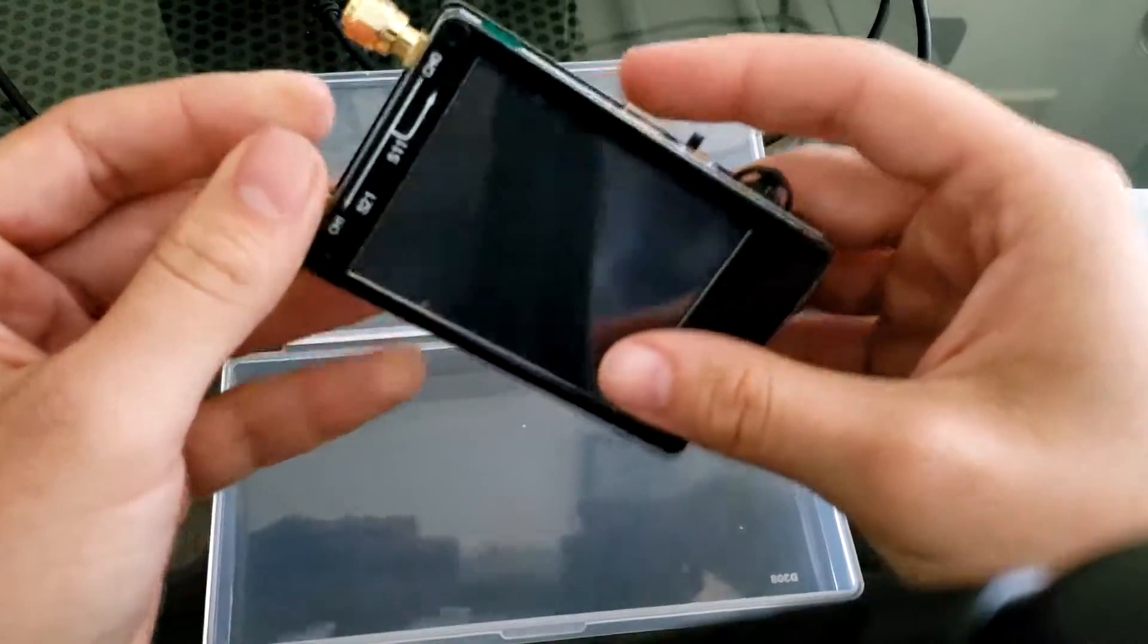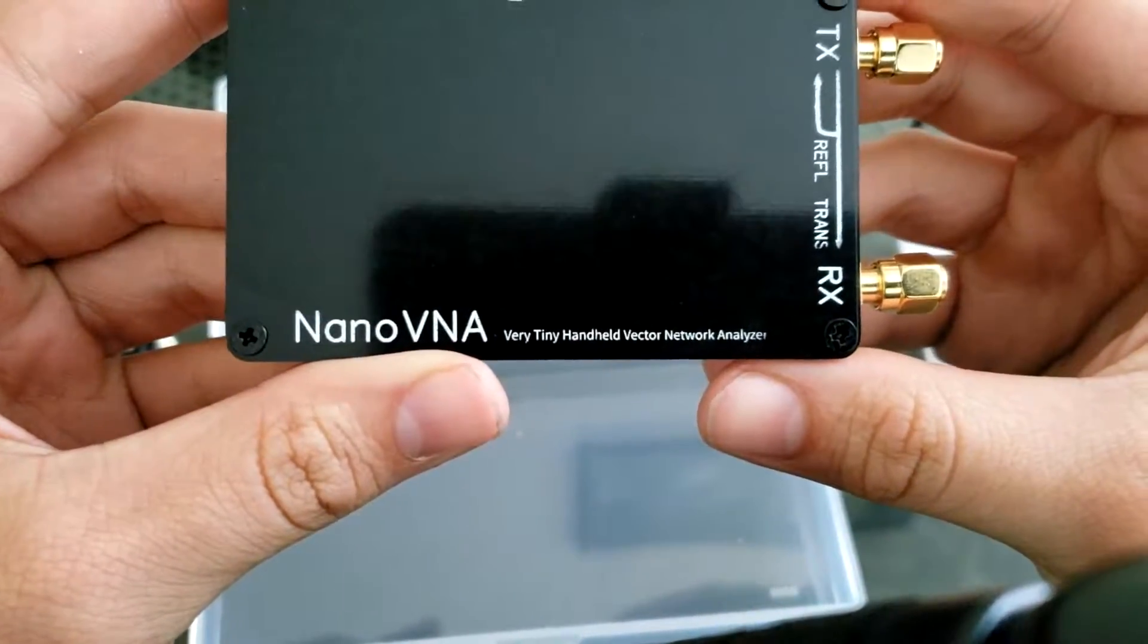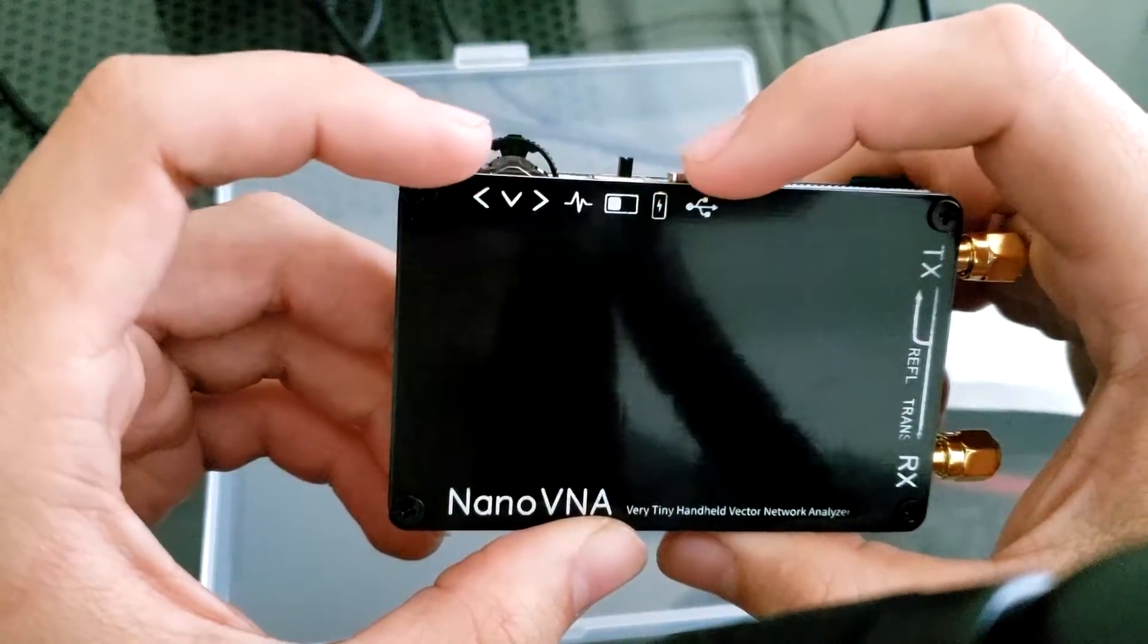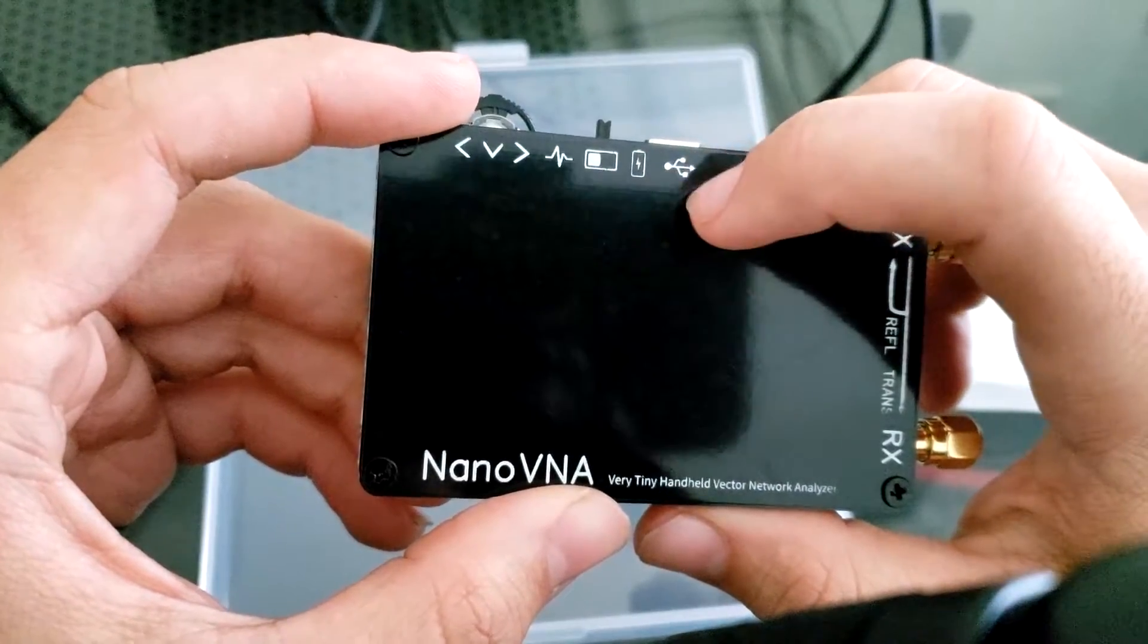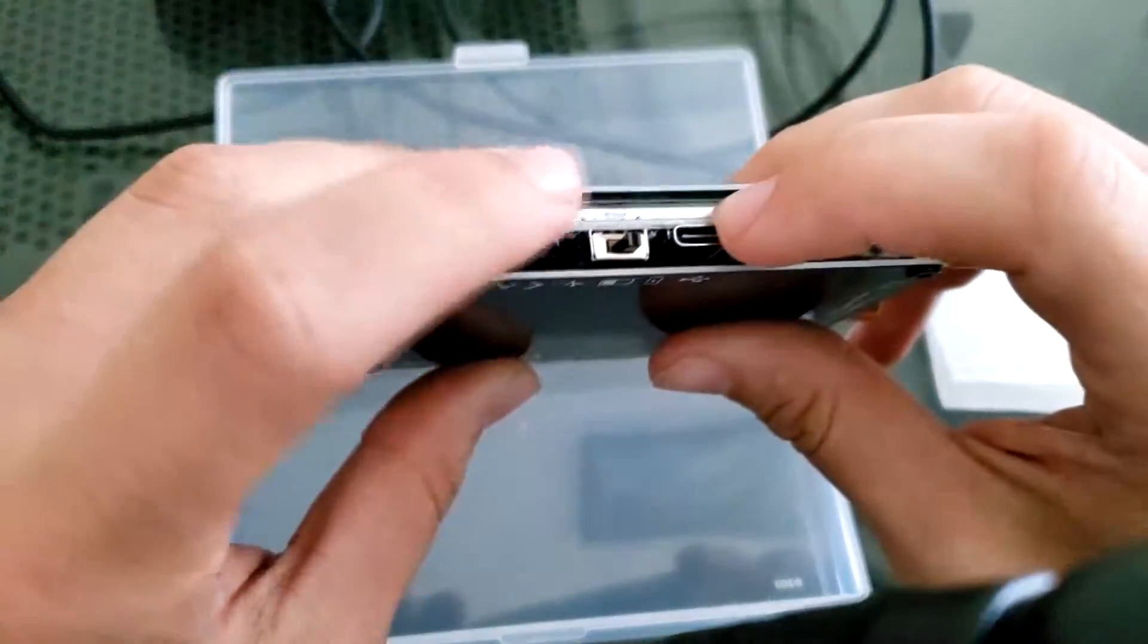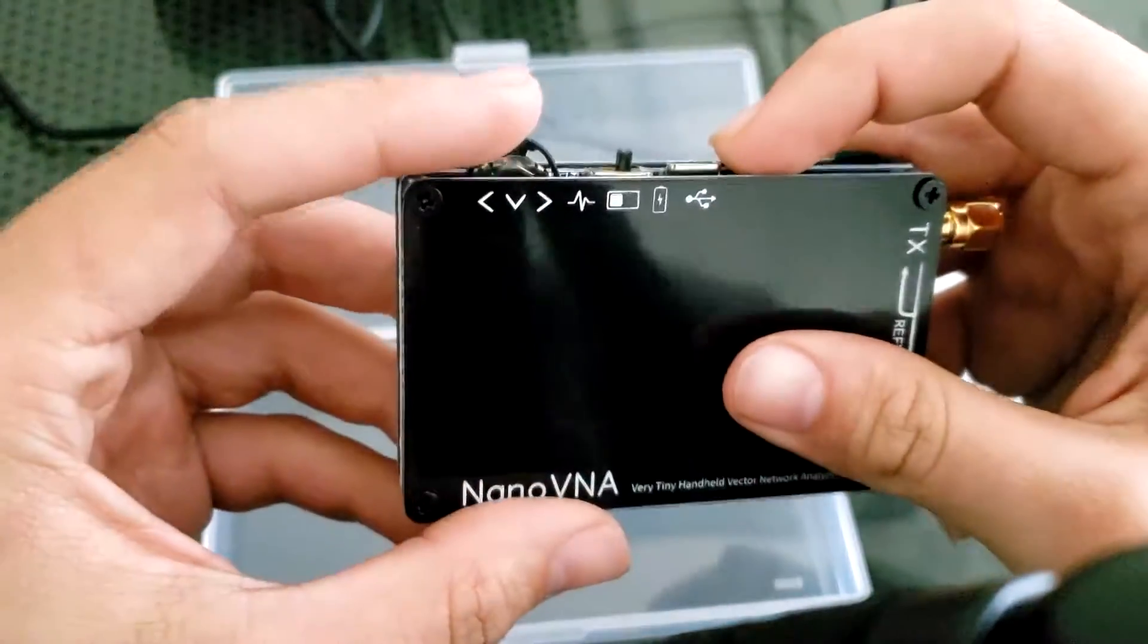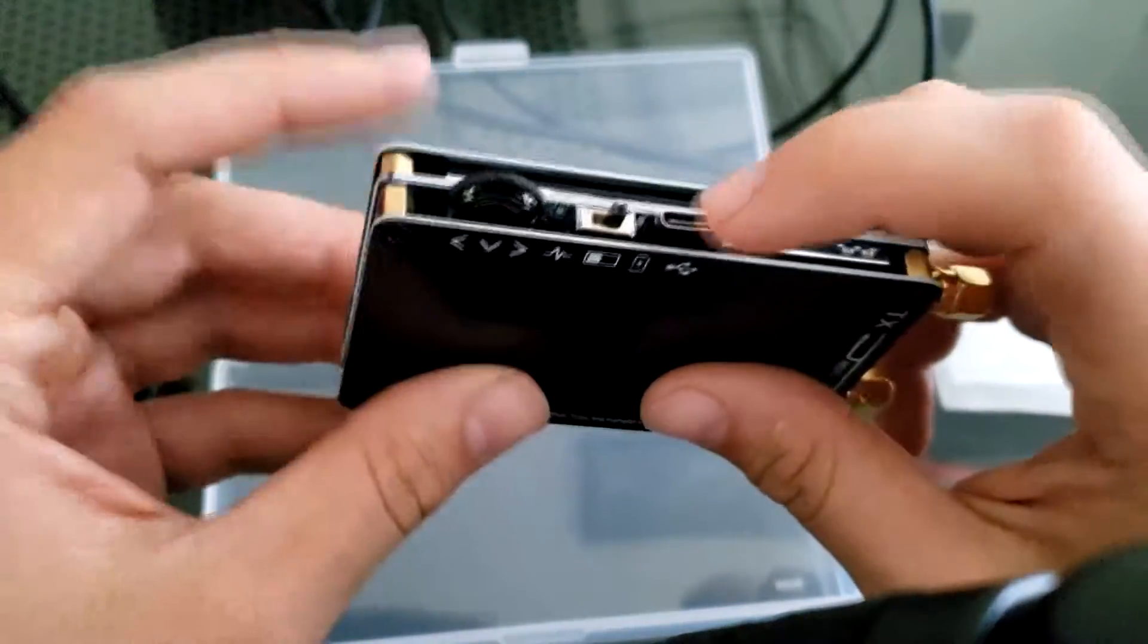Here is the device itself - the Nano VNA, the very tiny handheld vector network analyzer. This is probably a layout for different LEDs for different things going on. This right here is some type of wheel, I would assume maybe that changes the frequency. We'll figure that out. Here's a switch, I guess that would be the on switch.